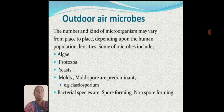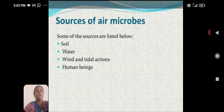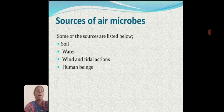Mold spores are predominant; for example, Cladosporium. Bacterial species may be spore-forming or non-spore-forming. Sources of air microbes include soil, water, wind and tidal action, and human beings.